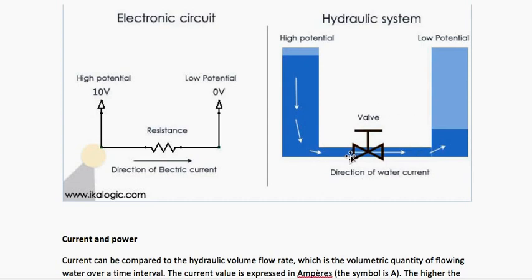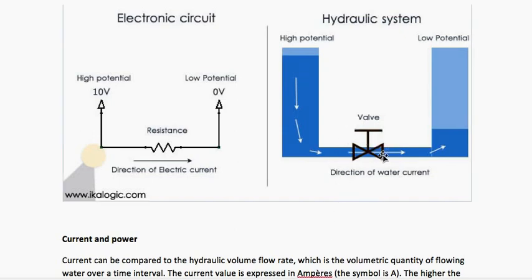Some circuits require resistances. For example, if you connect an LED you will need to connect a resistance to it. If one ampere of current is flowing but the LED can handle only 0.9 amperes, or even worse, if five amperes is flowing, that's too much current. We connect resistances to slow down the current flow so it won't damage the device. Sometimes resistance is necessary, and sometimes it's a problem for a circuit.